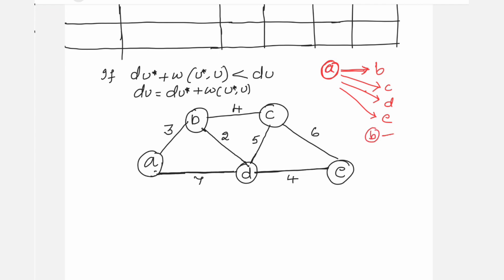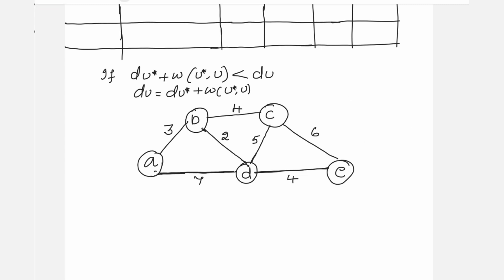If the source were B, then you compute B reaching A, C, D, E. Whichever is the source vertex, you take that as the initial vertex and start doing the steps for this algorithm. u* and u are representing the vertices in the given graph.